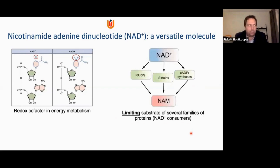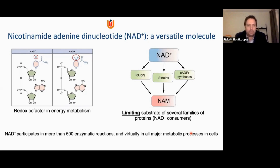But in recent years, probably the last two decades or so, there's more and more evidence that NAD can play a more pleiotropic role, because NAD is also the substrate for several families of enzymes, including the PARPs, the poly-ADP ribose polymerases, the sirtuins, and the cADP ribose synthases. These enzymes are not regulating just one reaction, but many different reactions in the cell. Therefore, NAD, as a substrate for these enzymes, can play a very versatile role in managing cellular homeostasis. By now, we estimate that NAD participates in more than 500 enzymatic reactions, covering basically all the metabolic processes in the cell.